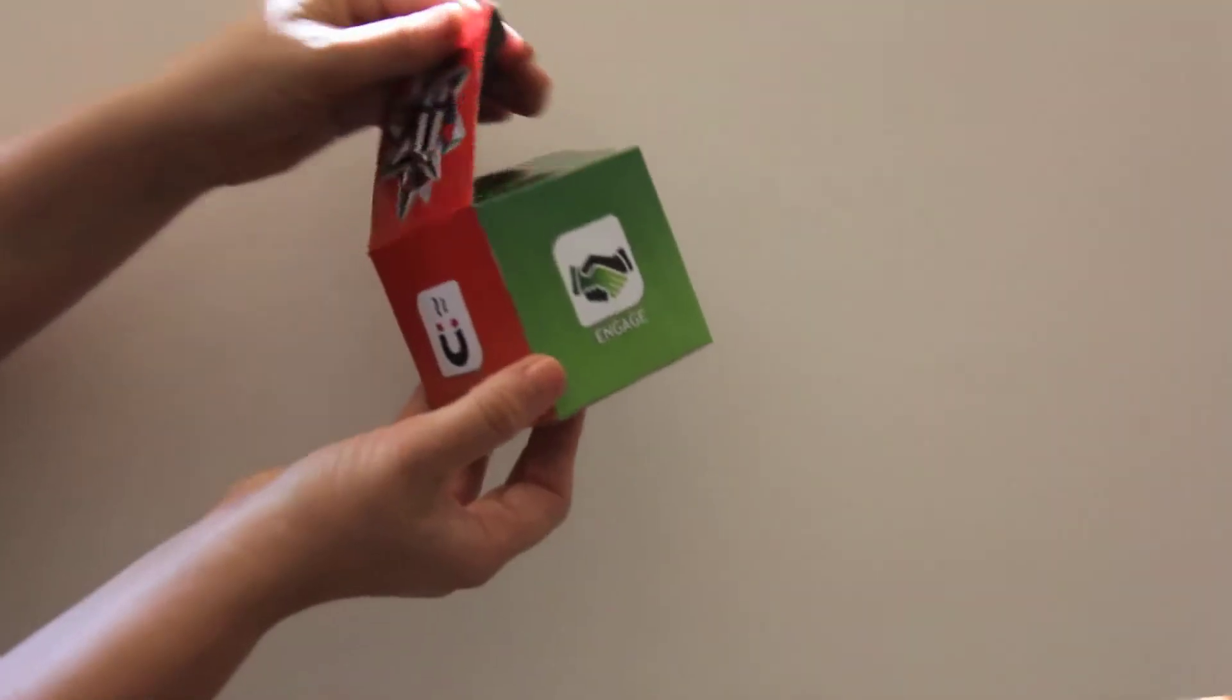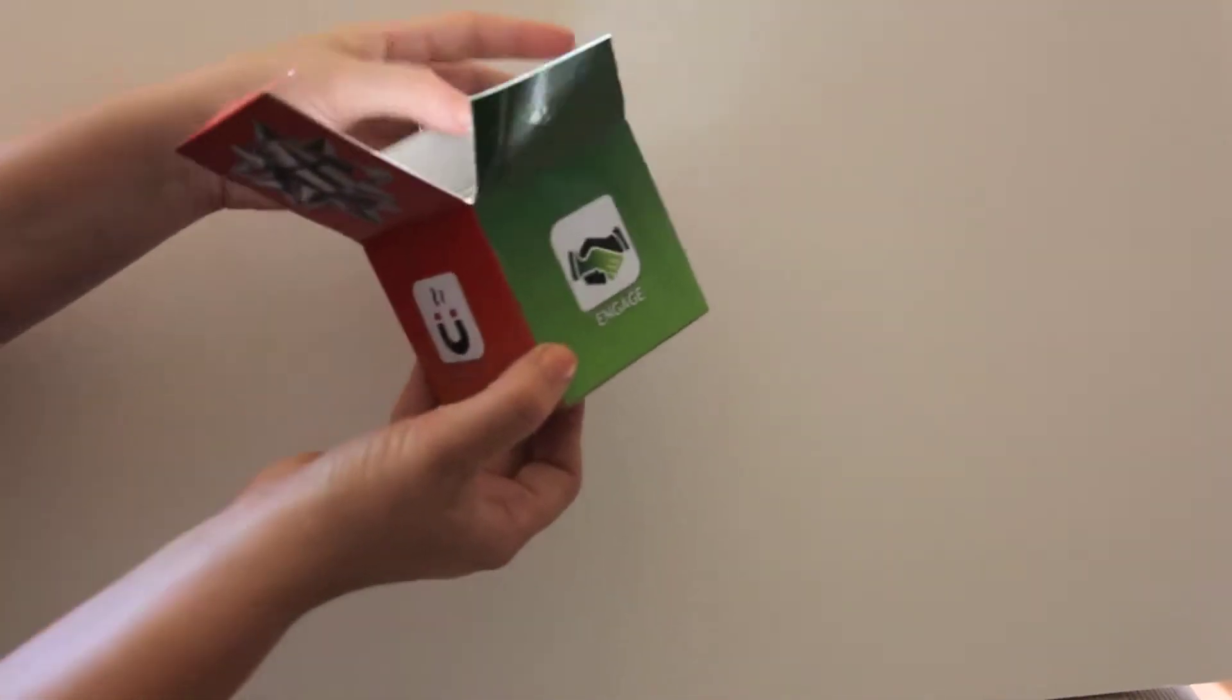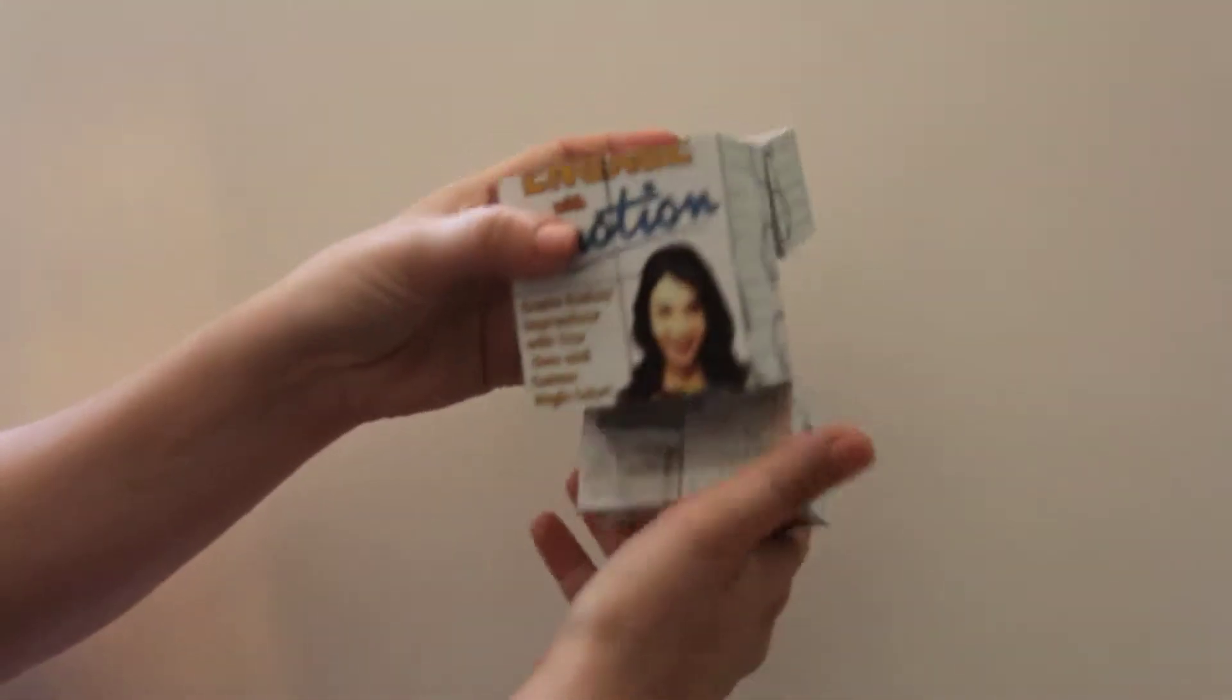The first item that we have is the Add Cube. This is absolutely perfect for desktops. Both the packaging and the cube itself are fully customizable. The cube can fold into all different types of shapes to create different images as well.